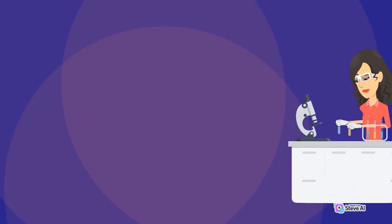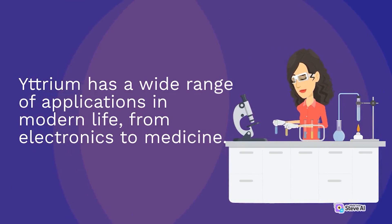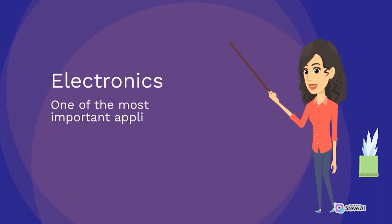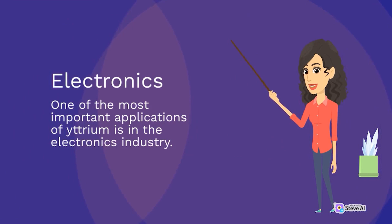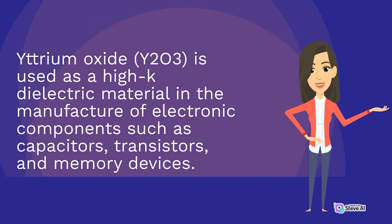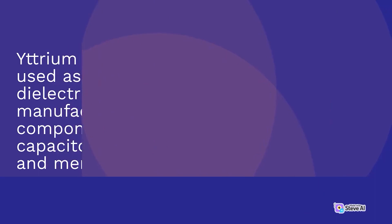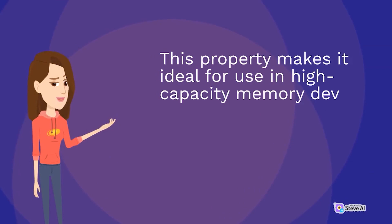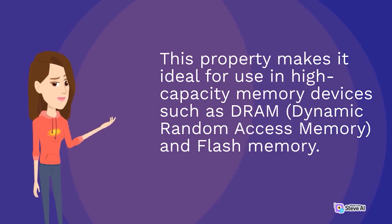Yttrium has a wide range of applications in modern life, from electronics to medicine. One of the most important applications of yttrium is in the electronics industry. Yttrium oxide (Y2O3) is used as a high-K dielectric material in the manufacture of electronic components such as capacitors, transistors, and memory devices. It has a high dielectric constant, which means it can store more electrical charge than other materials, making it ideal for use in high-capacity memory devices such as DRAM (dynamic random access memory) and flash memory.